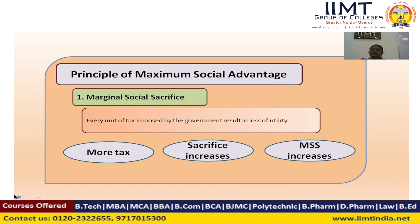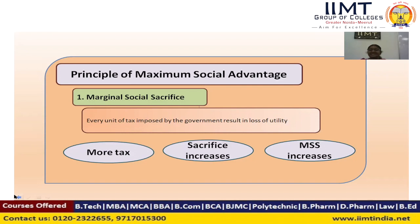When a government imposes taxation, there will be a loss of utility. The purchasing power of the people will come down and people will have to sacrifice. Every unit of extra tax will give extra sacrifice from each individual, and from each individual means society as a whole is sacrificing. So more tax means more sacrifice from the society — societal sacrifice.